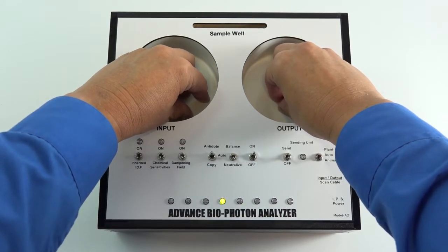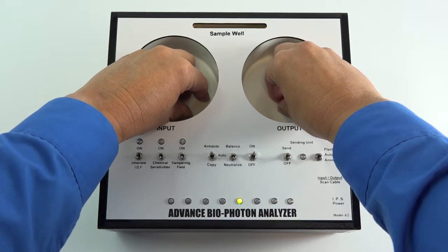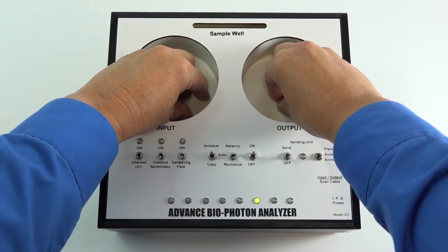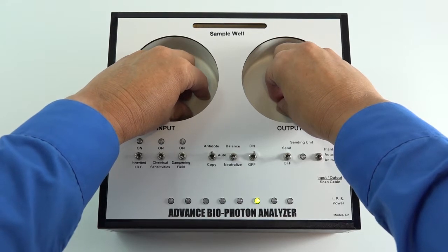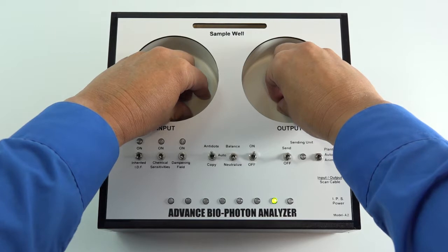The ABPA then processes that information and creates an antidote or countermeasure to factors which are creating stress on the system. That antidote is then applied to the right hand in the output well.